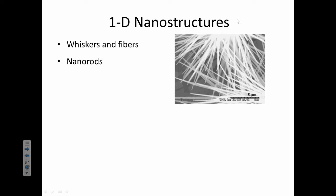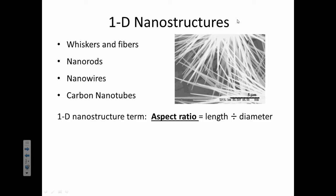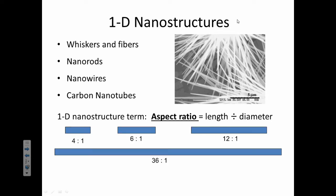I'm talking about things like nanowires and nanotubes. Other examples of 1D nanostructures would be whiskers, fibers, and nanorods. There's a term that comes along with these, especially when people are talking about carbon nanotubes. They have a high aspect ratio, which means a large length for their diameter. Here are some examples of what a 4 to 1 aspect ratio would look like versus a 36 to 1.